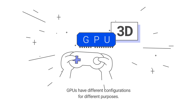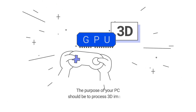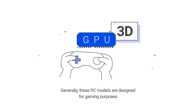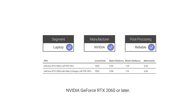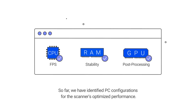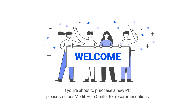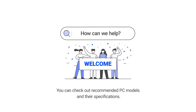GPUs have different configurations for different purposes. The purpose of your PC should be to process 3D images. Generally, these PC models are designed for gaming purposes — NVIDIA GeForce RTX 2060 or later. So far, we have identified PC configurations for the scanner's optimized performance. If you're about to purchase a new PC, please visit our Medit Help Center for recommendations. You can check out recommended PC models and their specifications.